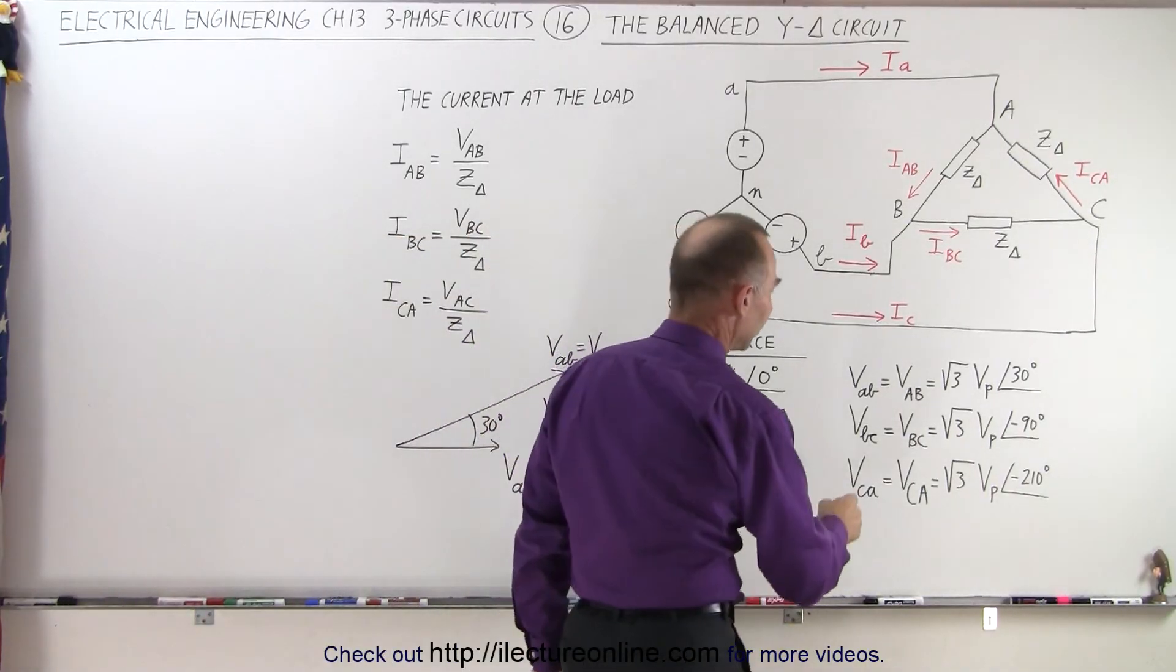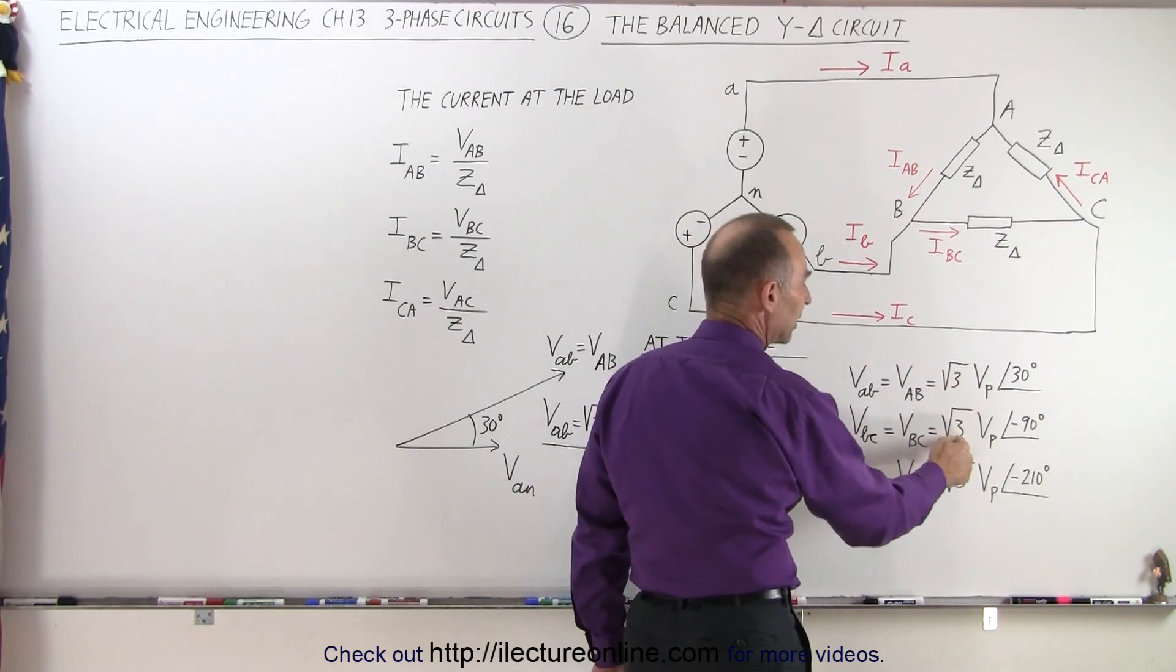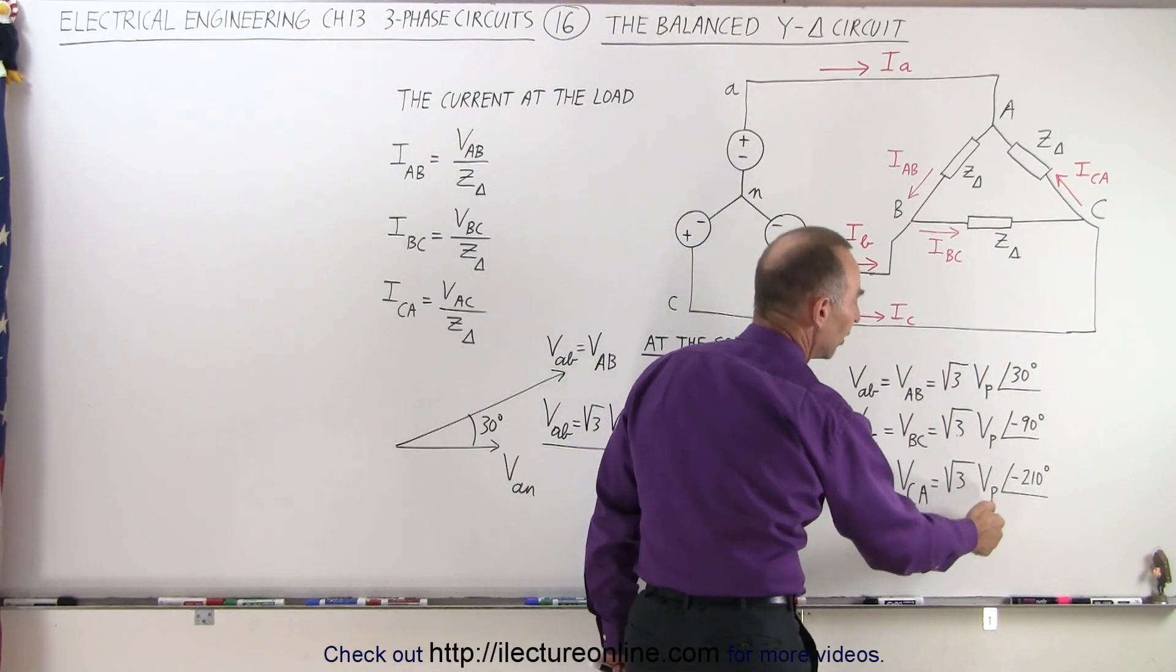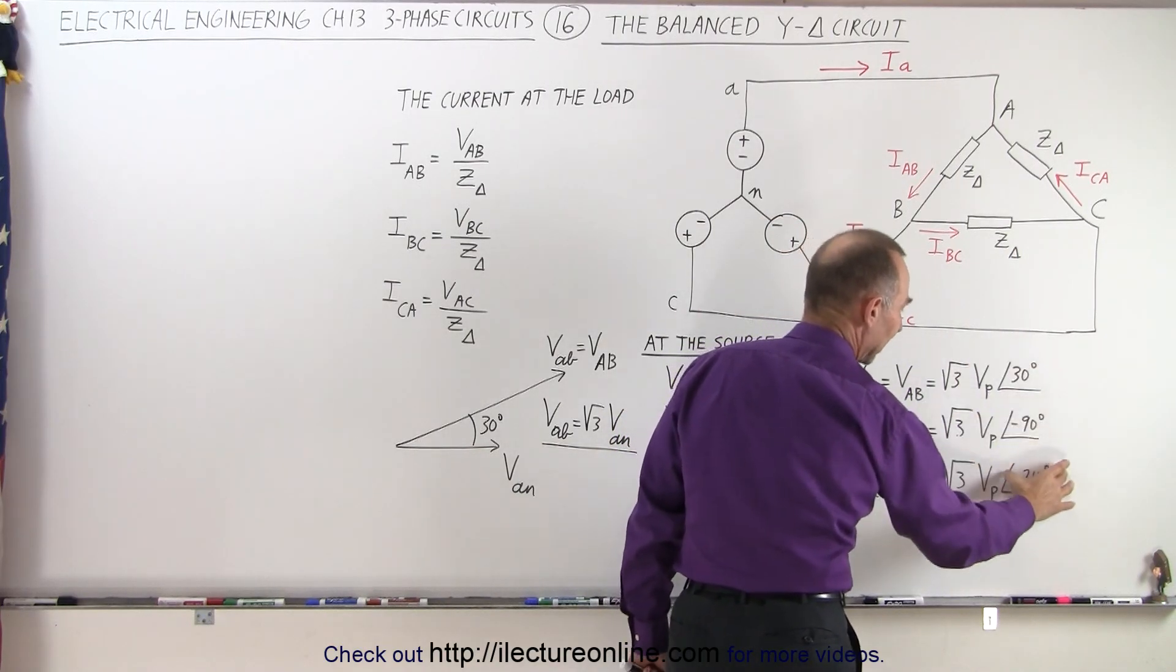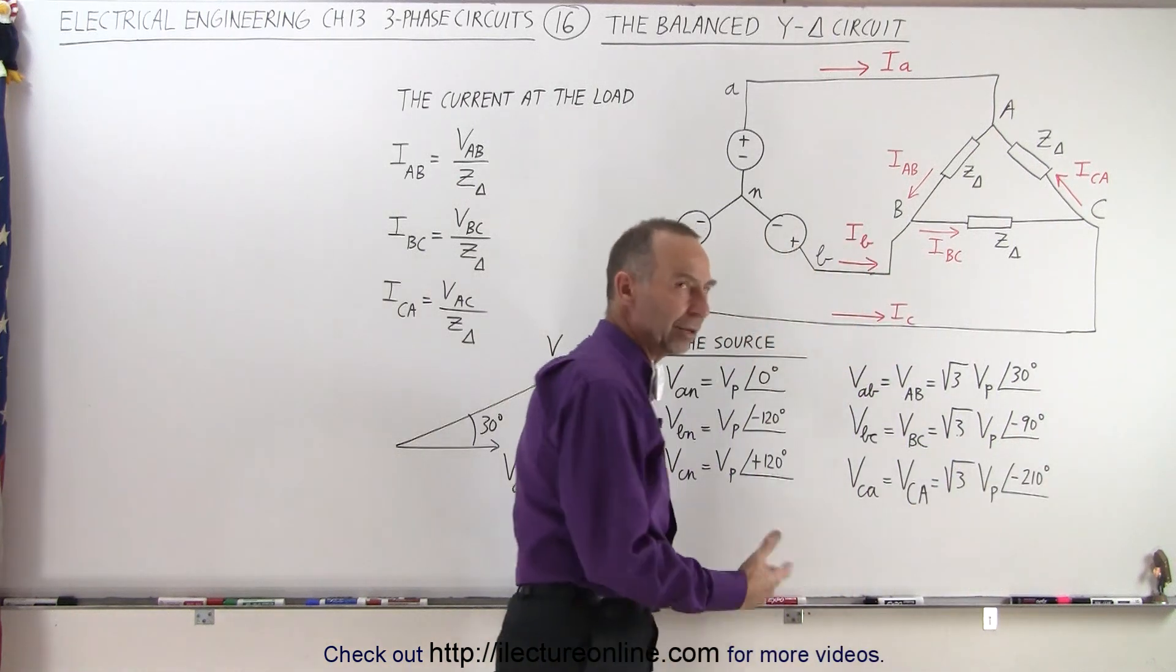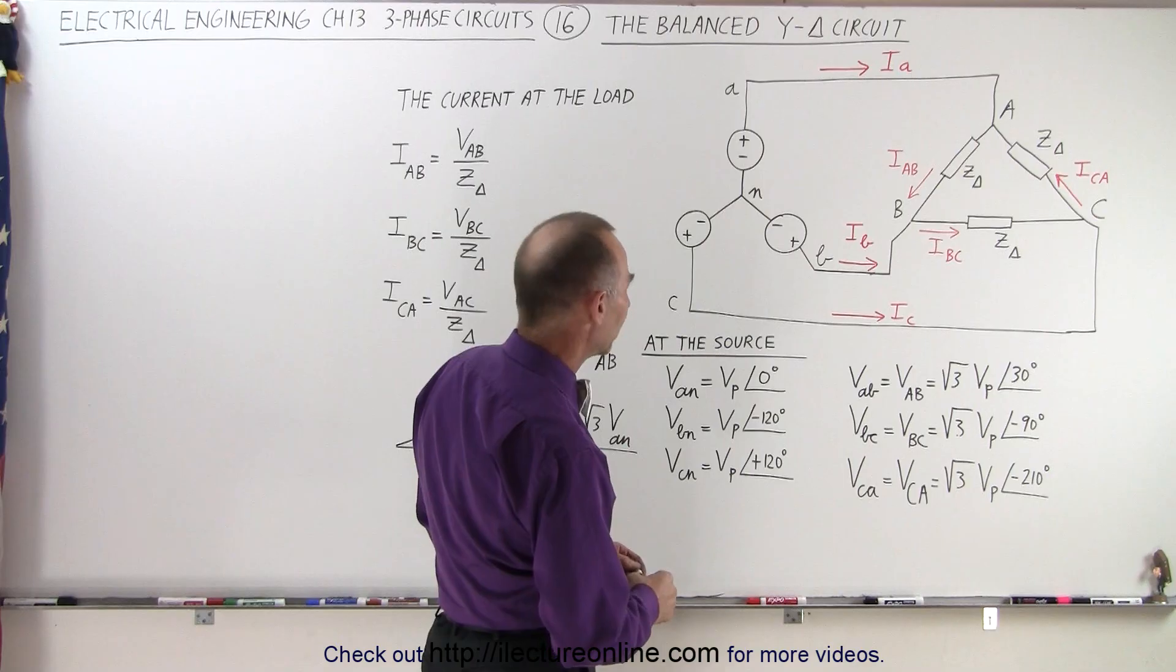The line voltages from A to B, B to C, and C to A equal √3 times the phase voltage. Since each has a 30 degree lead, we have 30 degrees, minus 90 degrees, and minus 210 degrees (which is the same as plus 150 degrees).